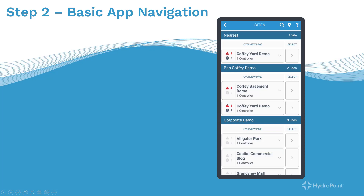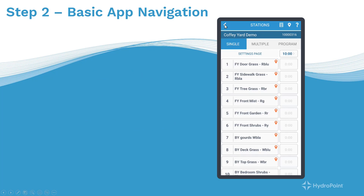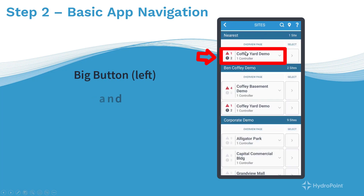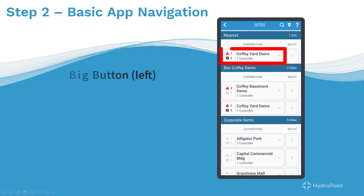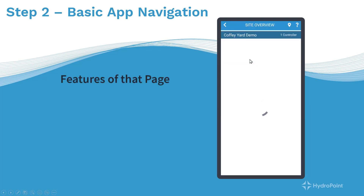To understand the basic structure of WeatherTrack Mobile, you need to understand that there are three main pages we'll work from: the Sites page, the Controllers page, and the Stations page. On every line that you see, there are two buttons — a big button on the left and a small button on the right. To drill down from menu to menu, you'll use the small button on the right, and you'll use the large button on the left to access the features for that page. If you wanted to look at all the features of the Sites page, you'd hit the large button on the left.